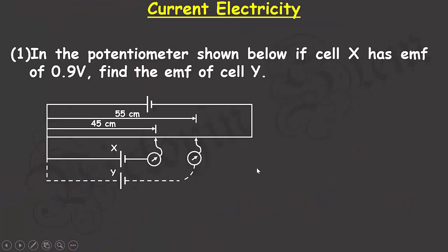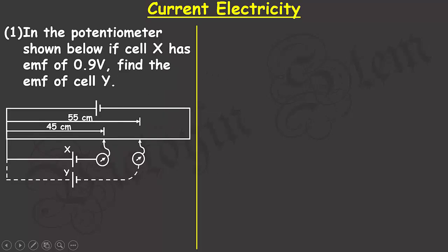I'll read out the question: In the potentiometer shown below, if cell X has EMF of 0.9 volts, find the electromotive force or the EMF of cell Y, as you can see on the screen.